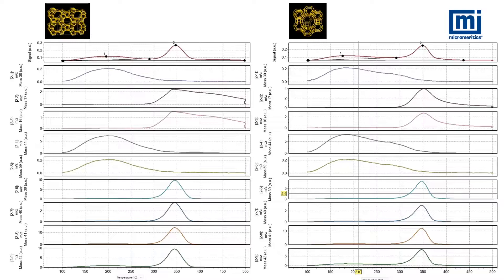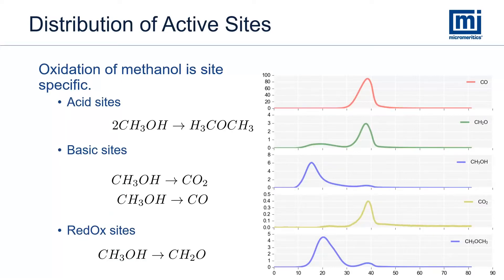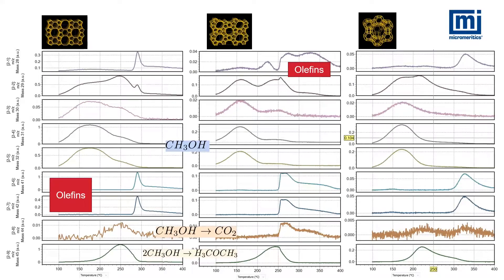Here is an example of using isopropylamine as a probe for two different zeolites. The left figure is of ZSM5 shown previously and Y-zeolite is shown on the right. Another example of temperature programmed surface reaction is using methanol as a probe. This has the advantage of characterizing the metal oxide rather than reducing it to metal form, which changes the material. Methanol chemisorbs with the metal oxide and follows with dissociative adsorption depending on the interaction with the surface. For acid sites, dimethyl ether is formed. At basic sites, carbon dioxide and carbon monoxide are formed. On redox sites, formaldehyde is formed. Shown here from left to right are ferrite, ZSM5, and Y-zeolite, with the mass spec signals collected.